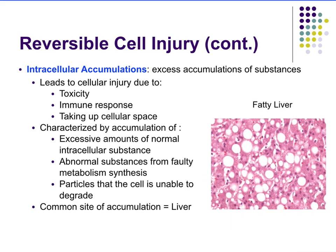Another type of reversible cell injury is intracellular accumulations, where you accumulate substances within your cells. It leads to cell injury because of toxicity, immune response due to all that accumulation, and just the fact that all that material takes up cellular space. It's characterized by excessive amounts of normal cellular substances, abnormal substances due to faulty metabolism or synthesis, or particles the cell can no longer degrade. A common site is the liver — for example, fat buildup causing fatty liver.